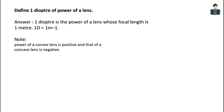Hello everyone, welcome to our channel. In this video we cover Chapter 9: Light Reflection and Refraction, Intext Questions. We are on Page 158 of the new book. First question: Define 1 Diopter of Power of a Lens.